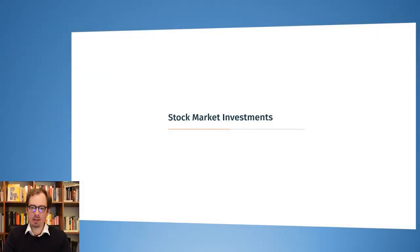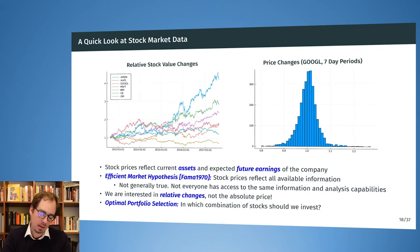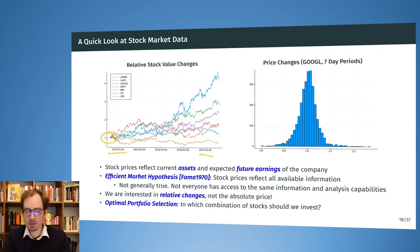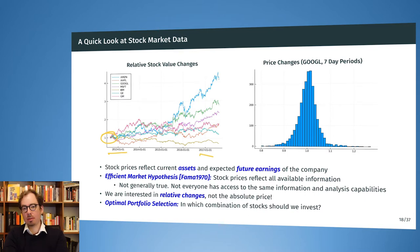The next example is about stock market investments. We see stock prices for Amazon, Apple, Google, and a couple more over the last years. They have all been normalized to start at one because we are not interested in the absolute prices but in the change of price. Over this time period of four or five years, the price for Amazon stock has more than quadrupled. In America, it is very common to invest your money in stocks, also for retirement.